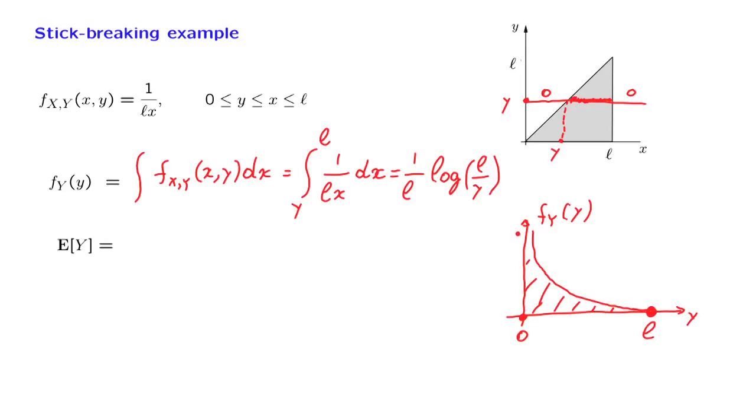Let us now calculate the expected value of Y. One way of doing this is by using the definition of the expectation. It's the integral of Y times the density of Y, which is 1 over L times the log of L over Y. And the range of the integration has to be those values for which we have a non-zero density. So we integrate from 0 to L, which are the possible values of the random variable Y. This is an integral that's pretty messy. One can actually integrate it using integration by parts. But the calculation is a bit tedious.